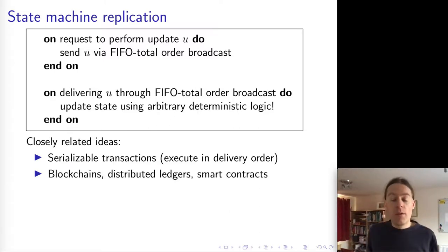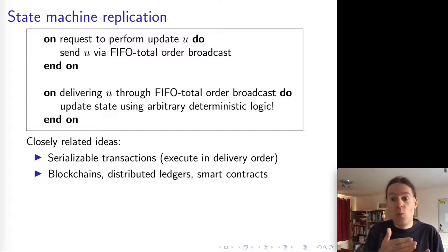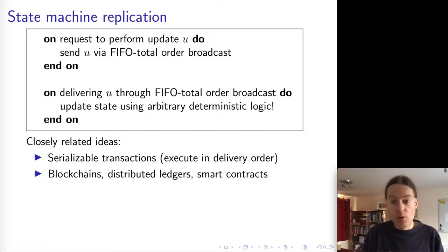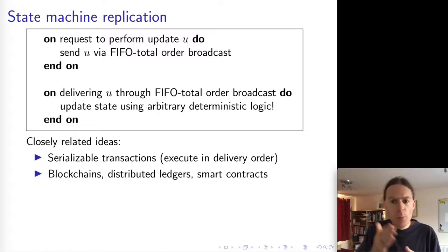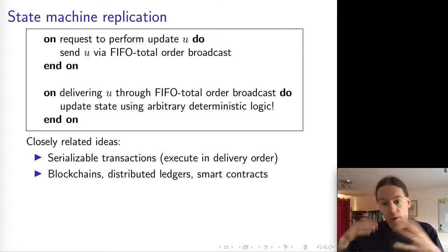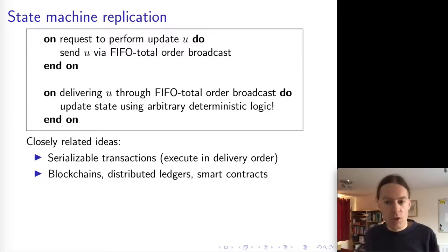A very similar principle underlies blockchains, distributed ledgers, and smart contracts. What you have in a blockchain is a chain of blocks, and this chain of blocks is actually exactly the sequence of messages delivered by a Total Order Broadcast protocol. There's a consensus mechanism for implementing this Total Order Broadcast, but once you've got it, it's just a sequence of transactions or updates to be performed in a certain order. Each replica processes those deterministic transactions in the same order and ends up in the same state — in this case, a ledger saying who owns which coins.